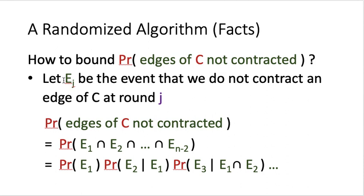To analyze this probability, we define E_j to be the event that we do not contract an edge of C at round j. The probability that no edge of C is contracted equals the probability of E₁ and E₂ and so on through E_{N−2}. This can be written as a product of conditional probabilities: P(E₁) · P(E₂|E₁) · P(E₃|E₁,E₂) · and so on.